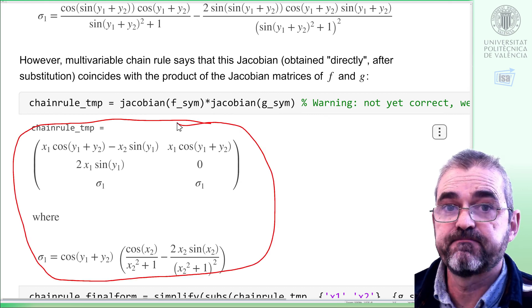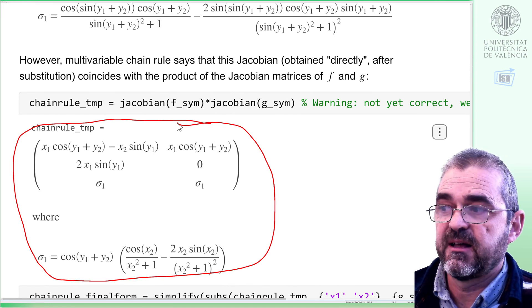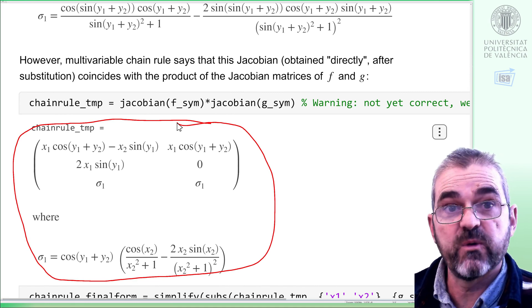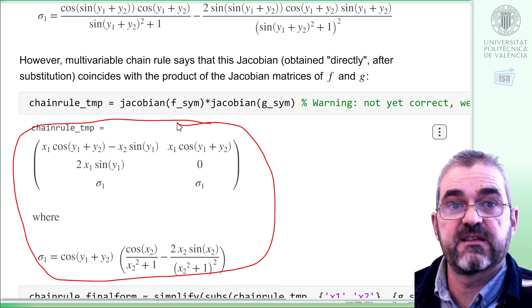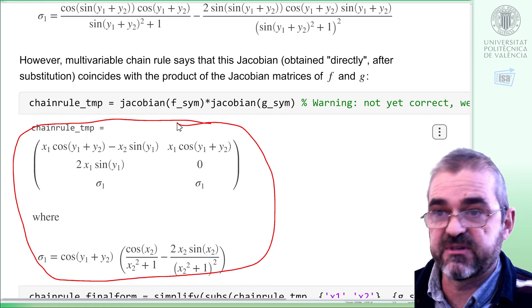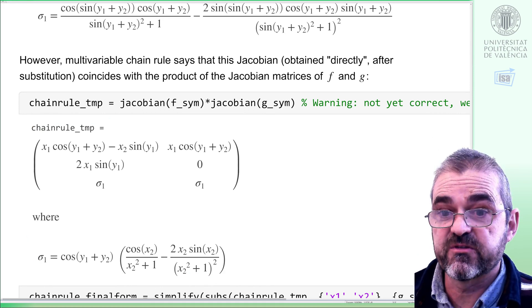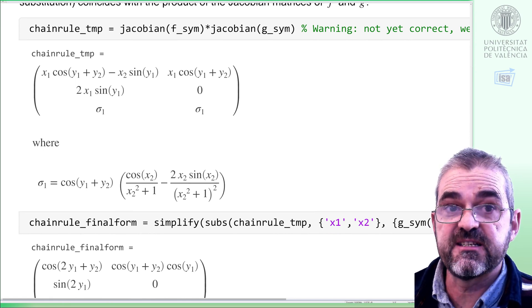However, we see that there is a problem. I mean, chain rule temporary has four letters in it. It depends on y1, y2, as expected, but on x1 and x2. That should not happen. Indeed, to finish the chain rule computations, come on, the inputs of f are actually the outputs of g.